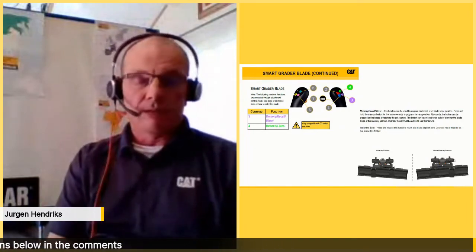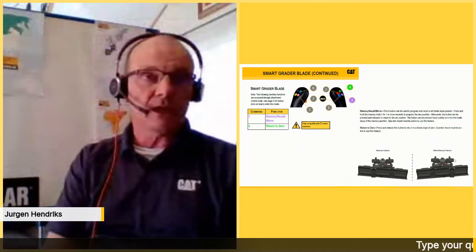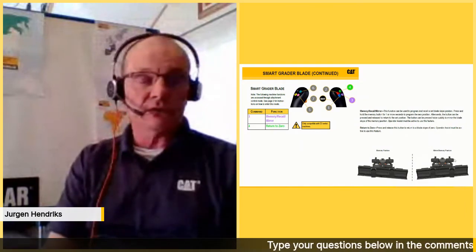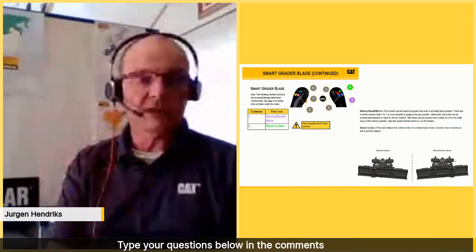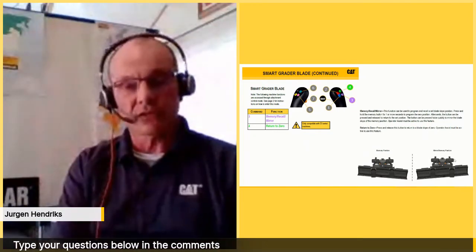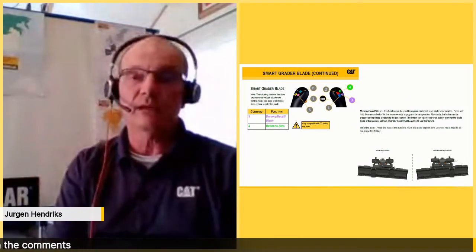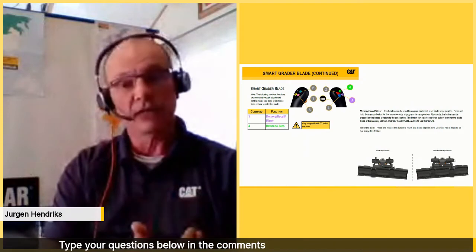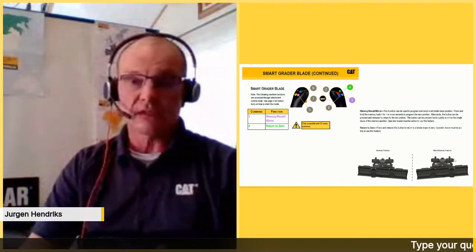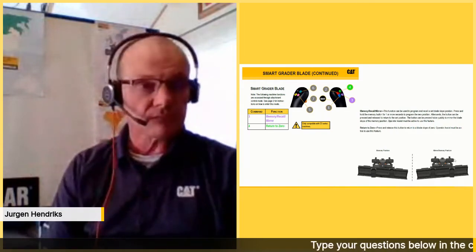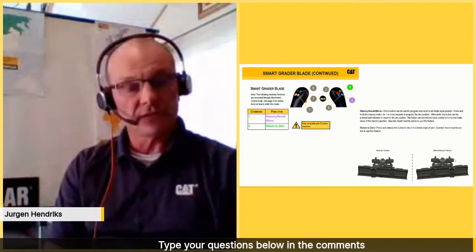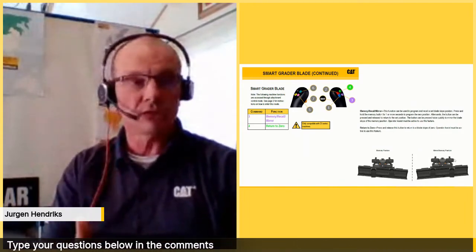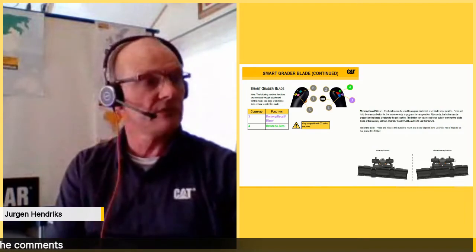What does that mean? Let's say you drive in one direction with a five or ten degree grading angle, then turn around after five kilometers and want to drive the opposite direction with the blade at the same angle but mirrored. The mirror function lets you go from five degrees left to five degrees right with one button press. Return to zero sets the blade horizontal. When you want to return to the five-degree angle, you press memory recall; to go horizontal again, you press return to zero.